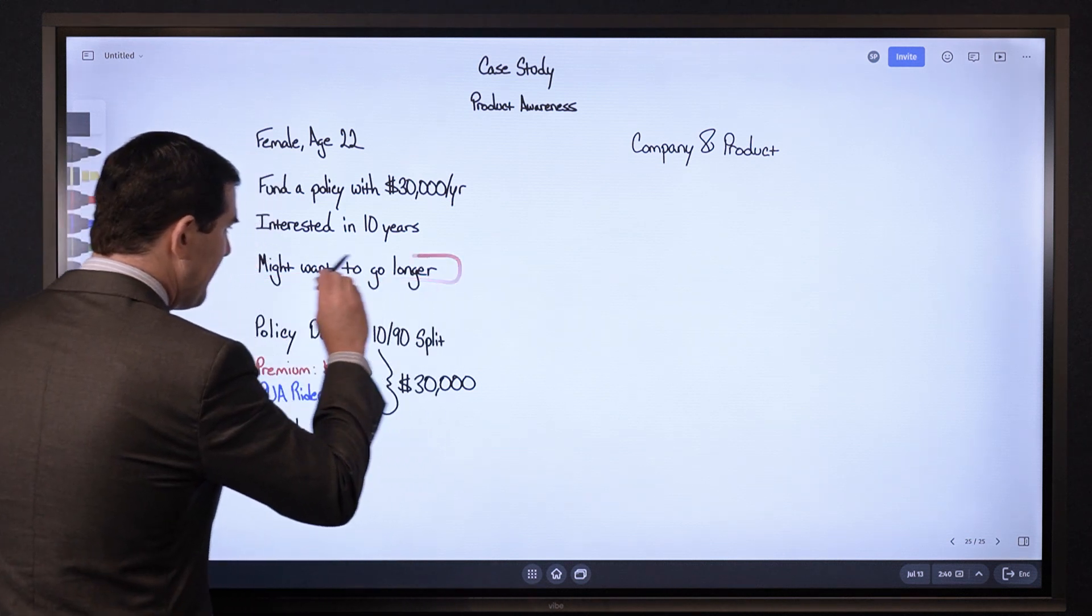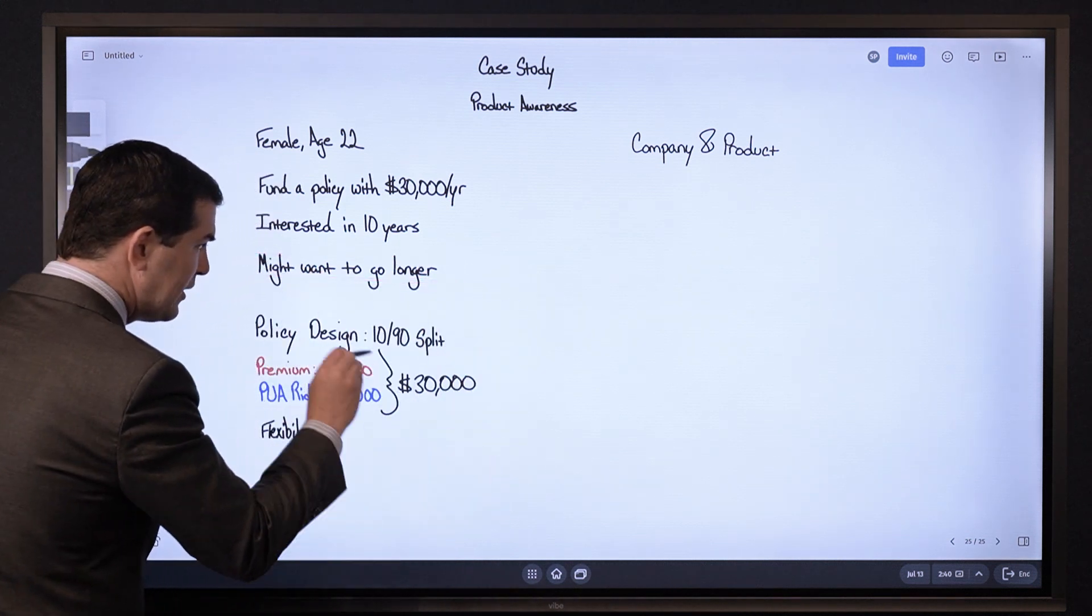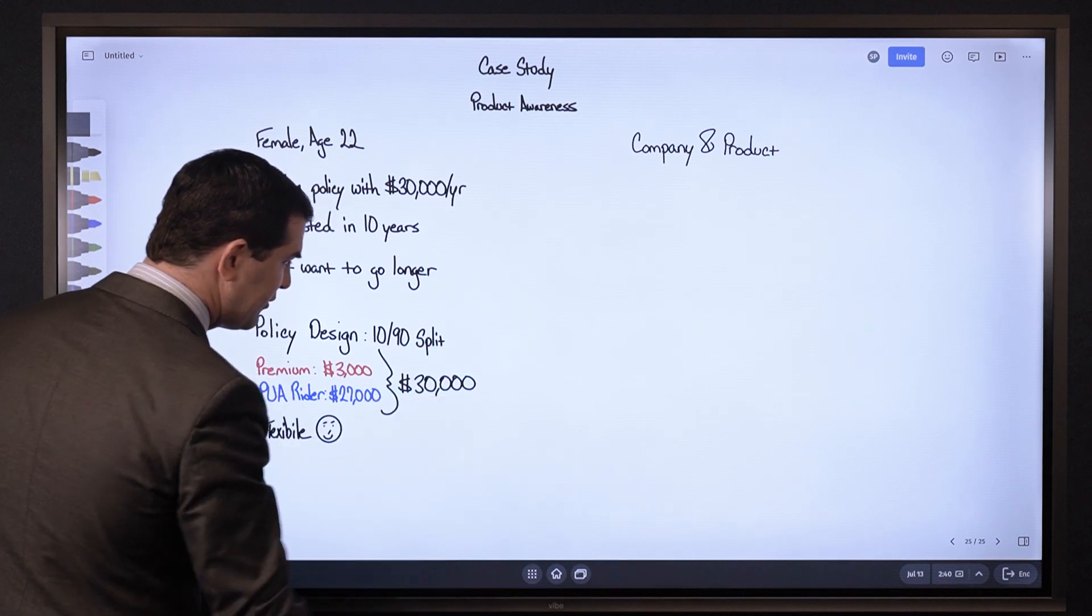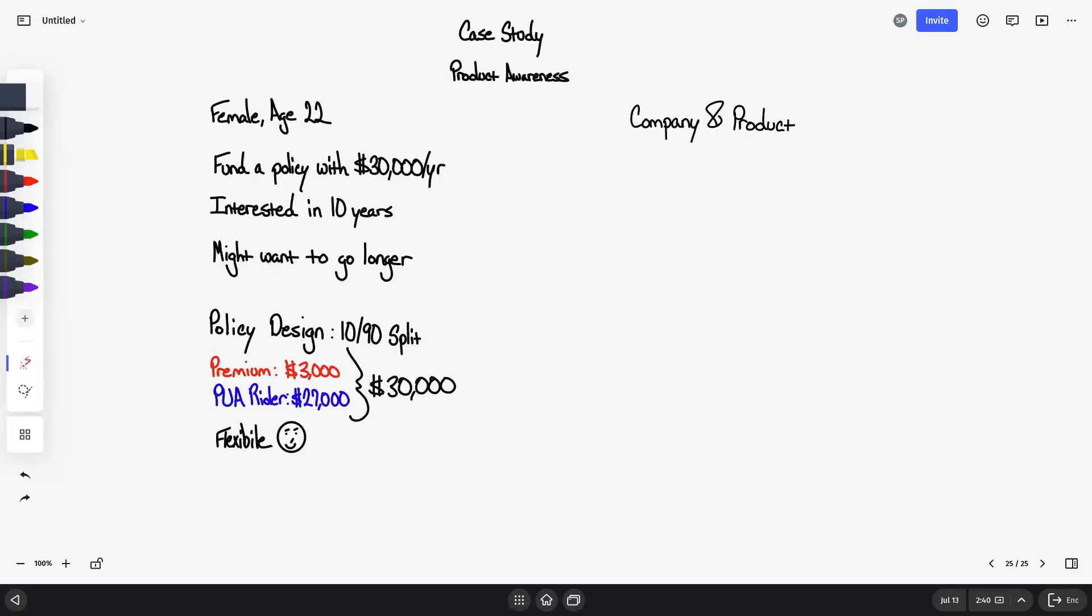On this point, I might want to go longer. What if she wants a 10-90 split, wants to fund $30,000 per year but wants to pay into it for 30 years or 50 years? The answer is yes, however the company and product selection will play a big role here.